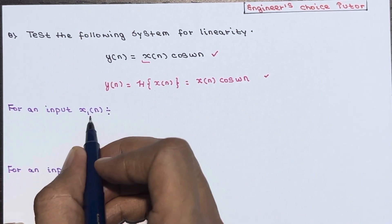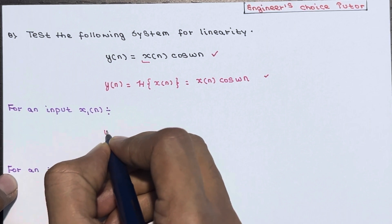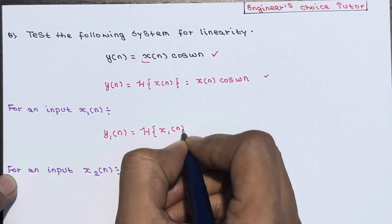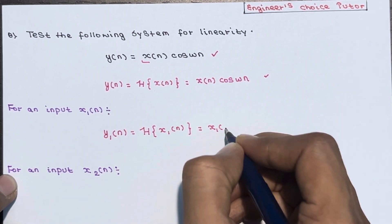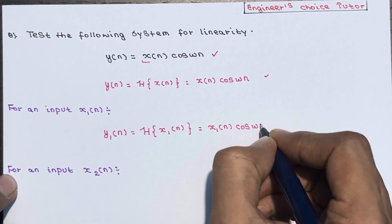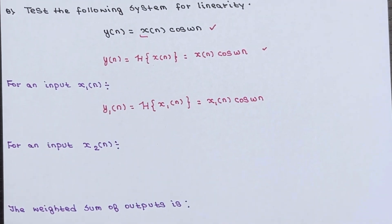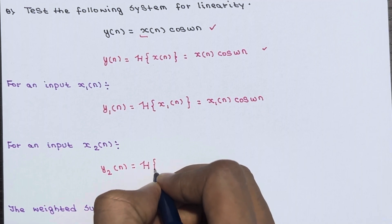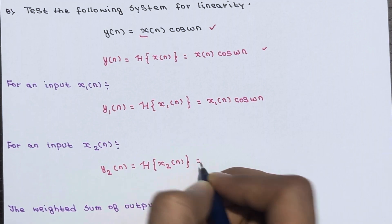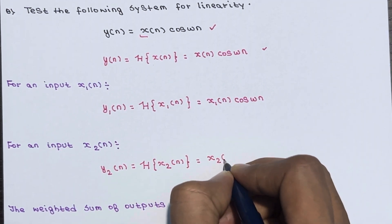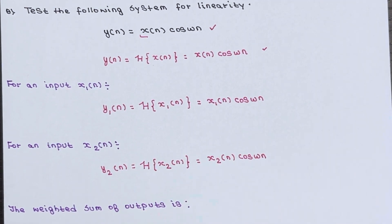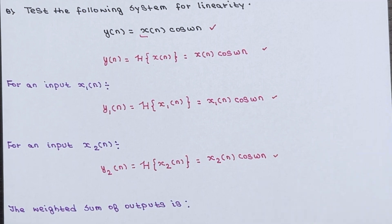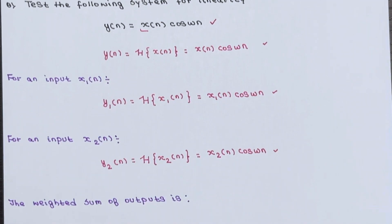For an input x1(n), the output will be y1(n), which is nothing but the transform of x1(n), equal to x1(n)·cos(ωn). Now for an input x2(n), the output will be y2(n), which is the transform of x2(n), equal to x2(n)·cos(ωn). We are applying the inputs individually to the same system one by one and got responses y1(n) and y2(n).